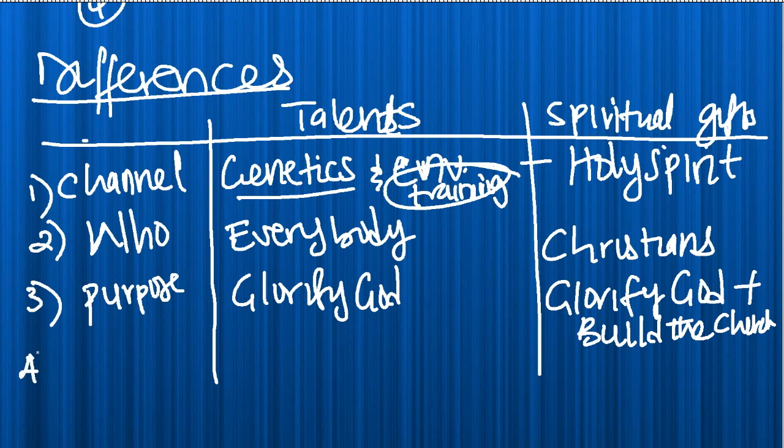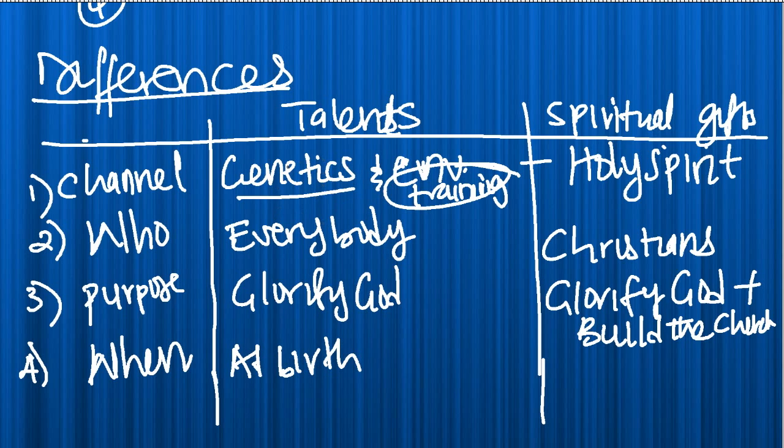So, the fourth one that I can think of is that of when a person receives them. When do you get your talents? That God gives you talents. Well, you get talents at birth. They come in your genes. And you have your genes set at birth. And here, spiritual gifts are given to Christians when they become Christians. So, at new birth. That new birth is becoming a Christian. It's also called becoming born again.